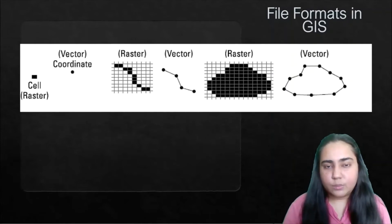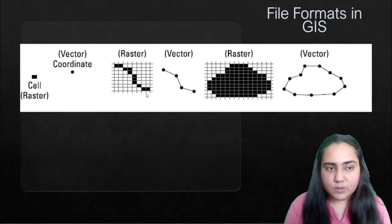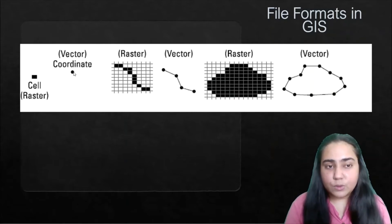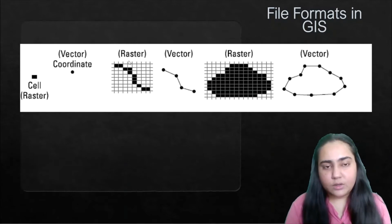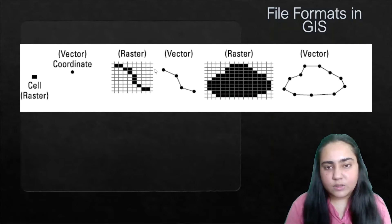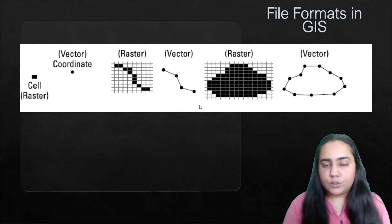Here is an example of what this looks like. The raster format is like graphing paper where you fill in the boxes — if you have just one point, you fill one box. Vector format, on the other hand, uses coordinates plotted on x and y axes. To show a line like a road, raster fills boxes along the path, while vector uses plotted coordinate points. The same applies to polygons — raster fills boxes, vector plots coordinate boundaries.